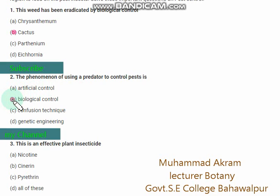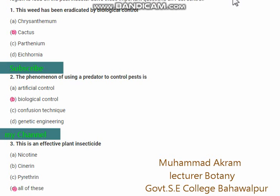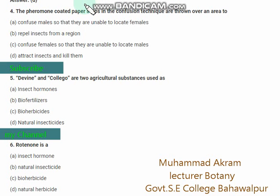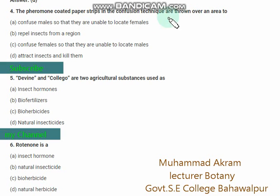The phenomenon of using a predator to control pests is called biological control — the right option is option B. Effective plant insecticides include nicotine — yes, all of these are effective plant insecticides. The pheromone-coated paper strips in the confusion technique are thrown over an area.